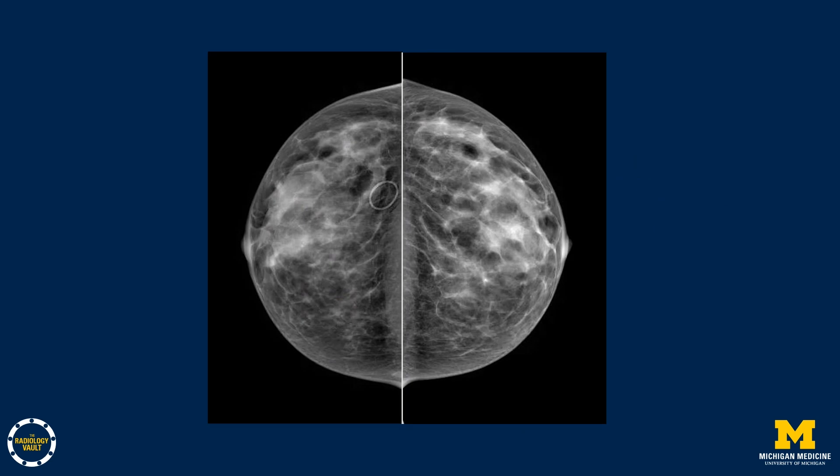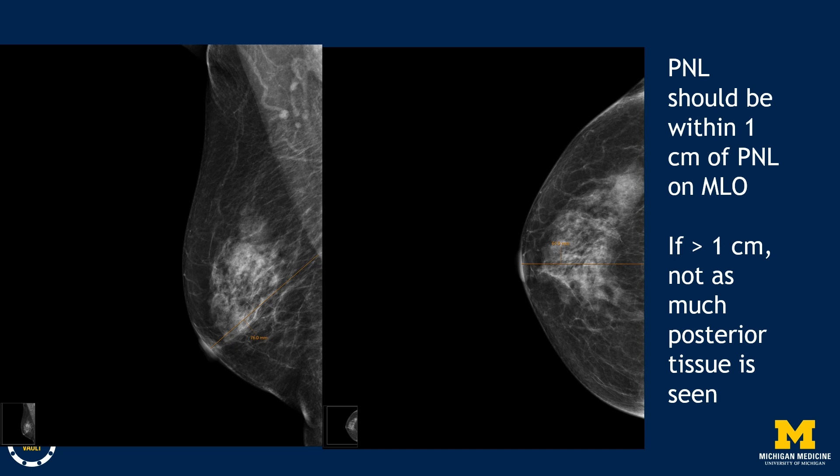An almost perfect craniocaudal view is shown here where we actually see the pectoralis muscle, as shown by the arrows, and both nipples are in profile. However, the pectoralis muscle will not be seen in approximately 20 to 30 percent of craniocaudal views. To ensure that enough posterior tissue has been obtained, the posterior nipple line should be measured and it should be within one centimeter of the posterior nipple line on the MLO. If it's more than one centimeter, not as much posterior tissue has been imaged.